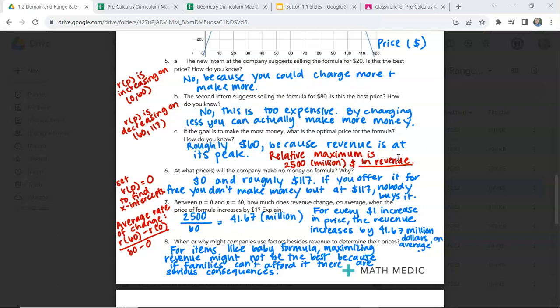At what price will the company make no money on formula? So at $0 and $117. So if they sell it for $0, they're not going to make any money. If they sell it for $117, no one's going to buy it because it's too expensive.